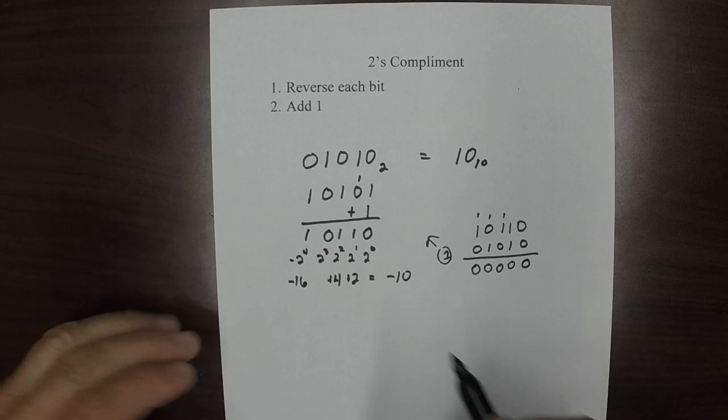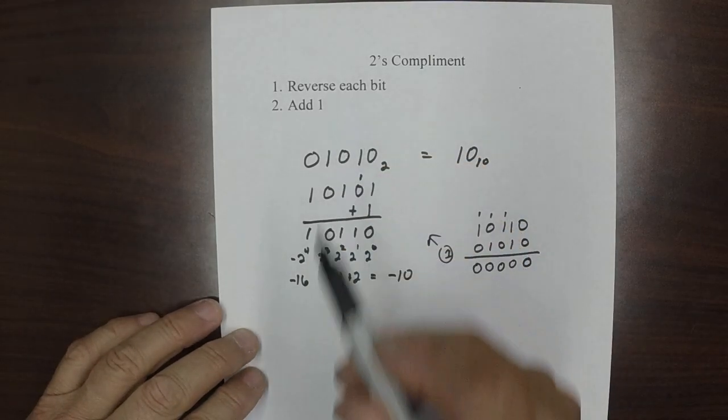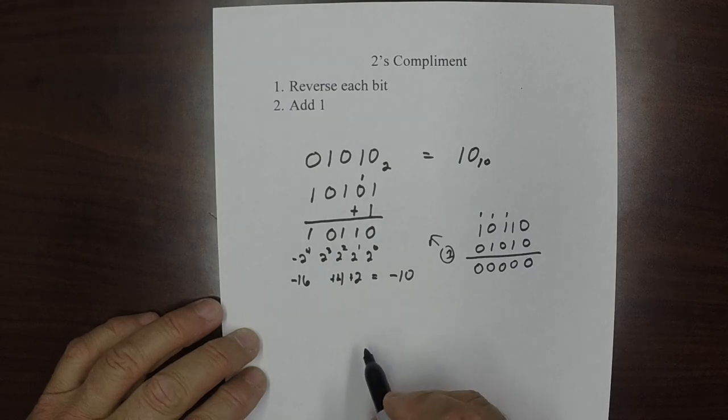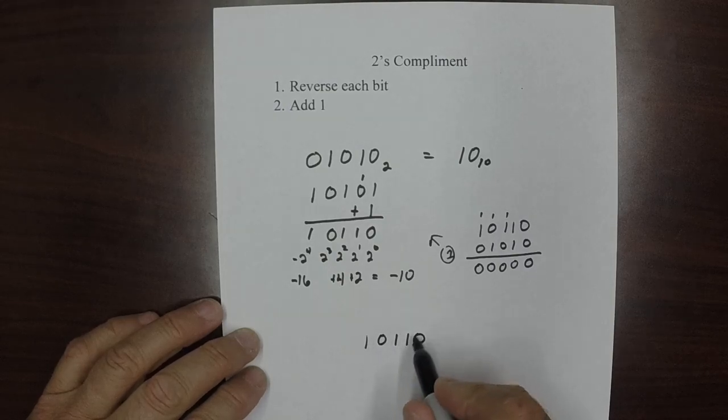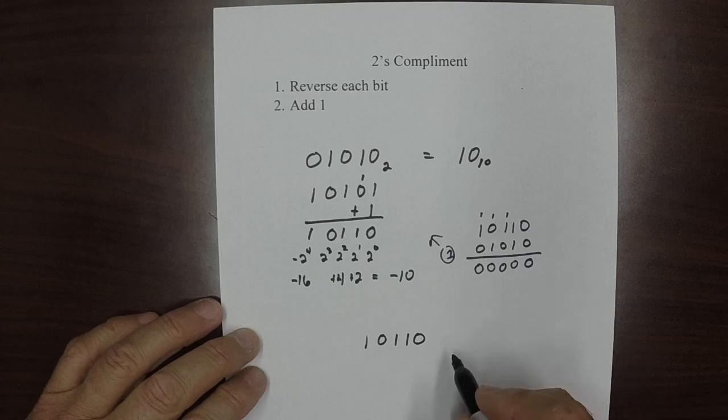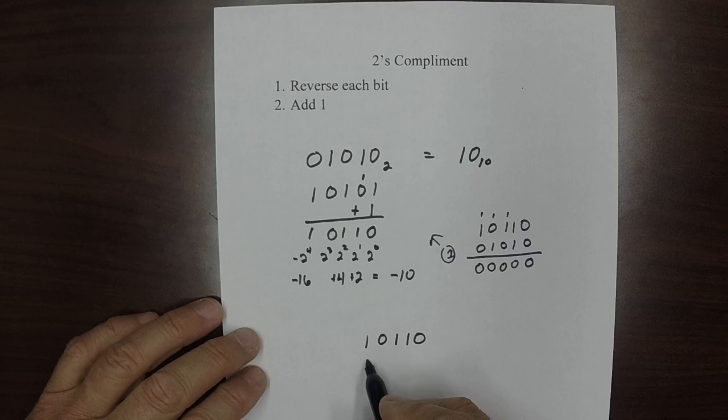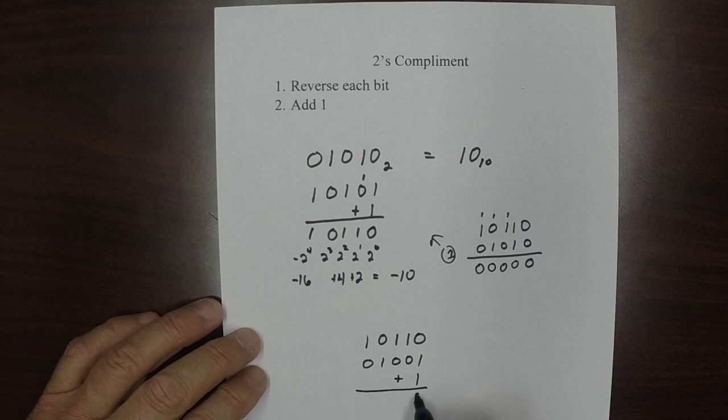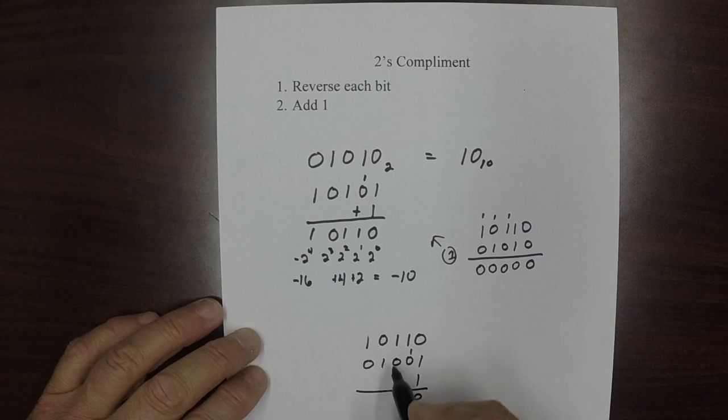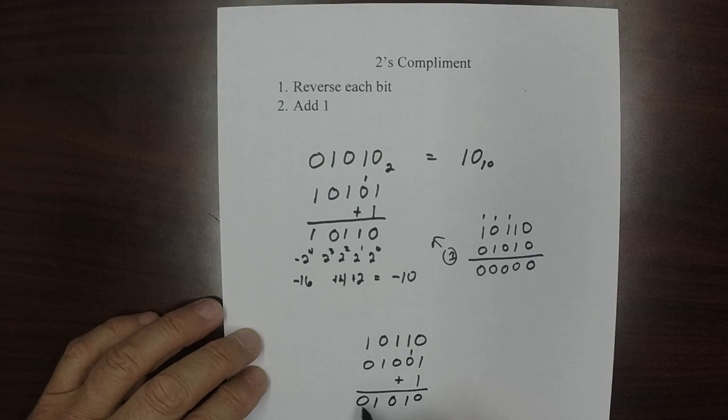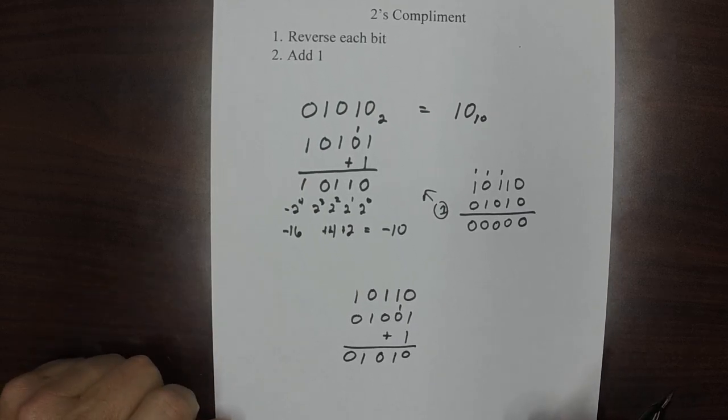The other way to convert it is actually just to apply this method right here. So let's take our negative number, our negative number is 1, 0, 1, 1, 0, and we want to convert it back to positive. We just do exactly what we did up there. We reverse the bits and we add 1 to it. There is a positive 10 right there.